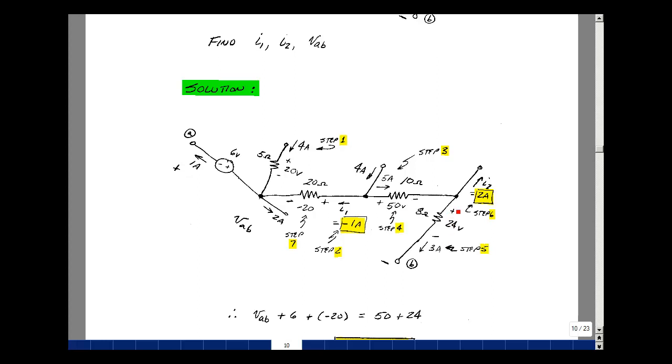I'm also given the voltage across the 8 ohm resistor as 24 volts, so I'm going to use Ohm's law to take this voltage and divide by the resistance and get 24 volts divided by 8 ohms, or 3 amps, and that's my fifth step.